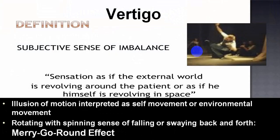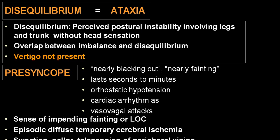Vertigo is a sense of imbalance where the person experiences an illusion of motion interpreted as self-movement or environmental movement — a rotating, spinning sensation, sense of falling, swaying back and forth, or merry-go-round effects. This can be objective or subjective. In ataxia and disequilibrium, postural instability is mainly seen during walking. In presyncope, the person says they are about to faint, nearly fainting, or nearly blacking out, lasting a few seconds, very frequently associated with orthostatic hypotension, cardiac arrhythmias, and vasovagal attacks.